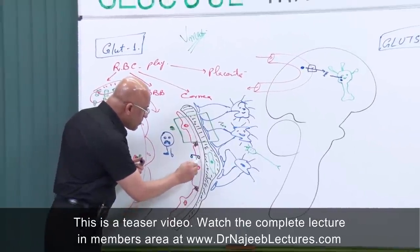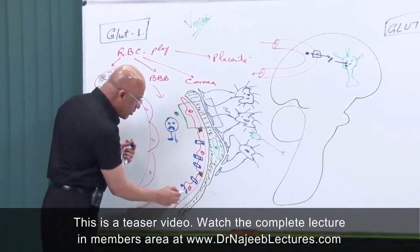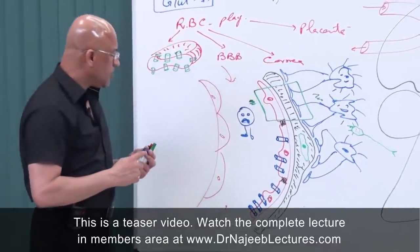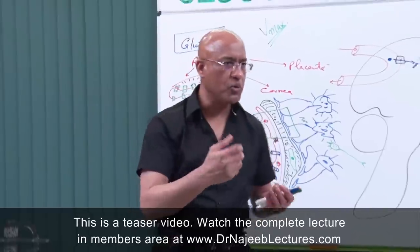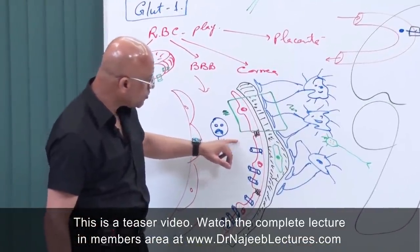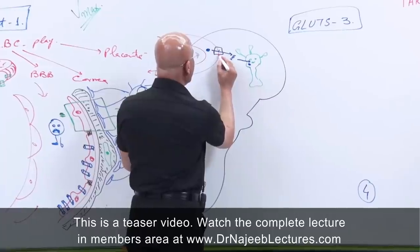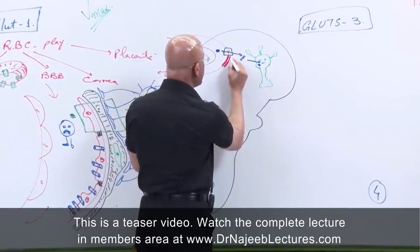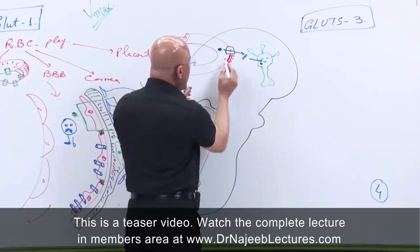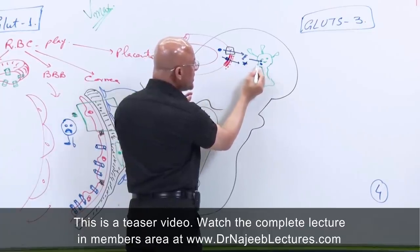GLUT1 is present on the endothelial cells of the blood-brain barrier and has a Km of approximately one to two millimoles per liter. This means that even when blood glucose levels are low, some glucose can still pass through the barrier. Once glucose crosses these layers — endothelial cells, basement membrane with pericytes, and astrocyte foot processes via GLUT1 — it then needs to enter the neuron itself.